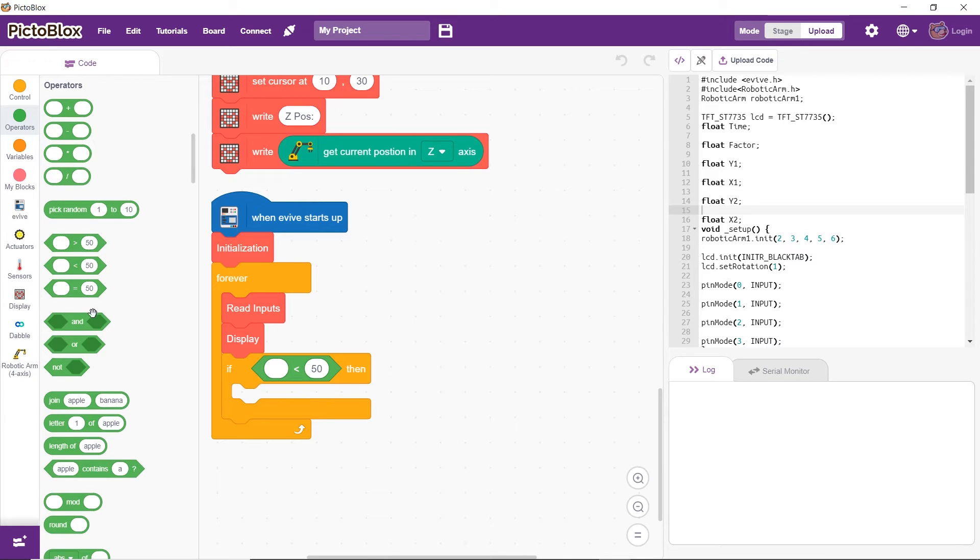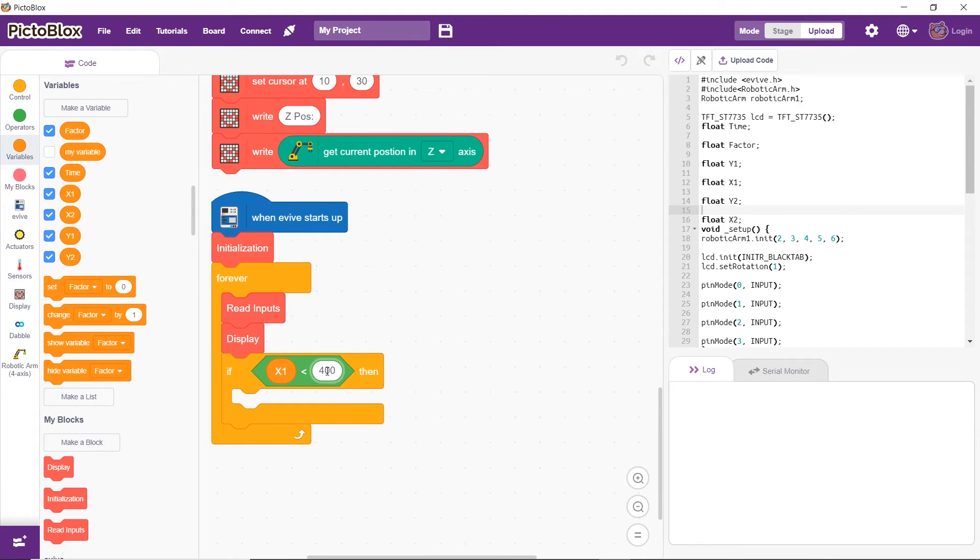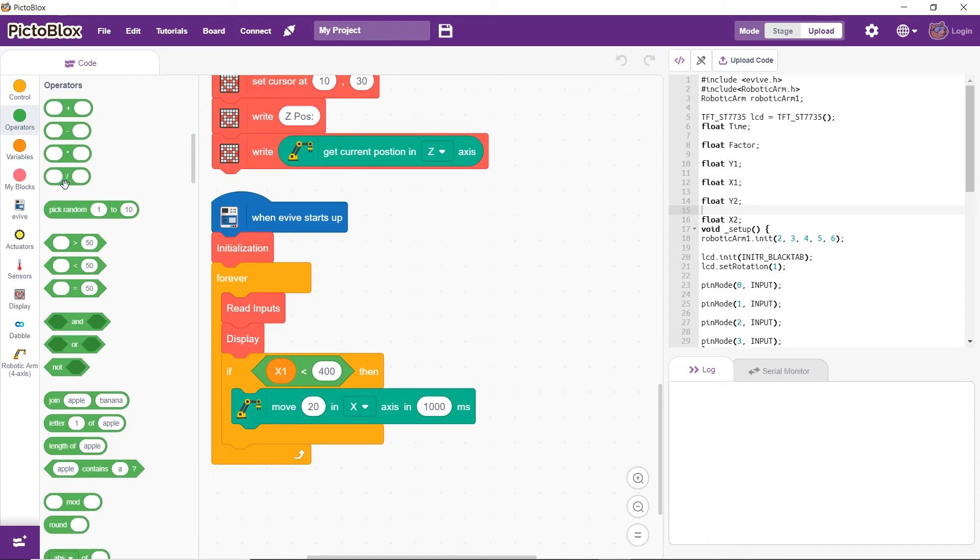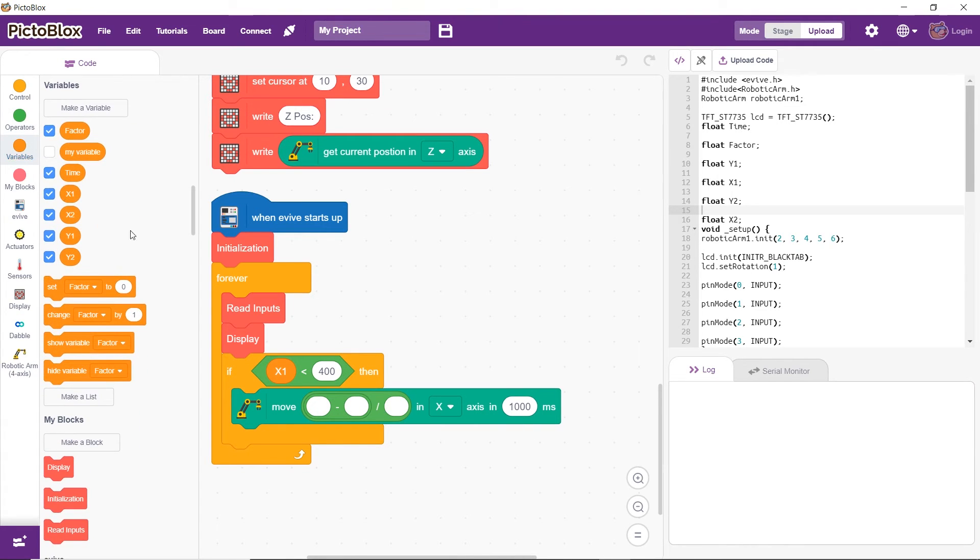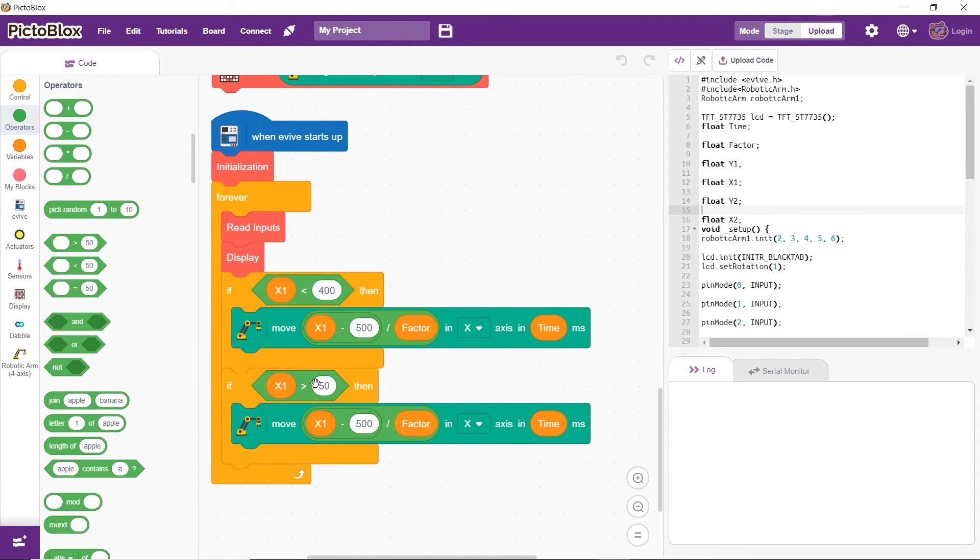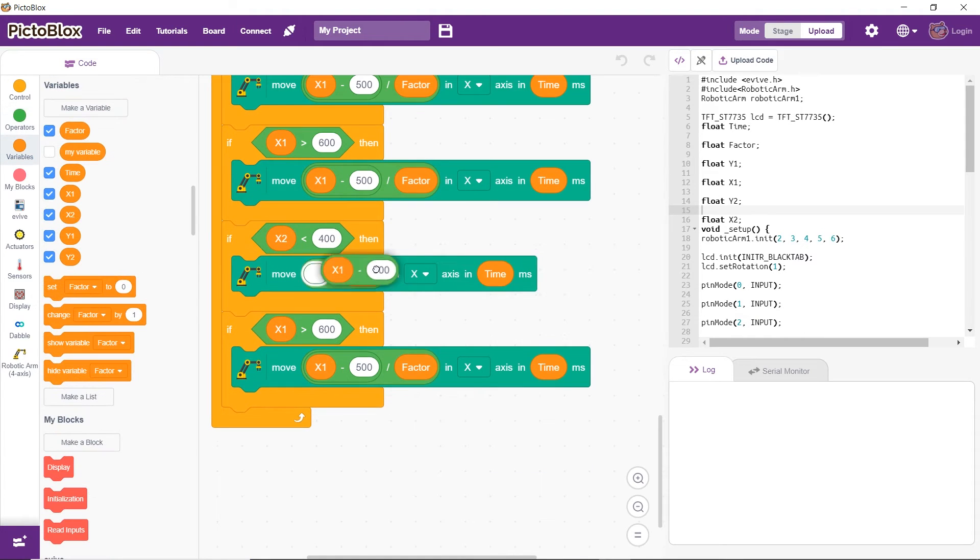The joystick is an analog device. So, to control the speed of the arm, we must use analog values between 0 to 1023. First, we will check if the value is less than 400. If it is, then move the arm by the values obtained by dividing the difference between the joystick value and the center of the joystick, which is 500 by the factor. We are using the division factor to scale down the value. This will make the robotic arm move along the negative x-axis. You can change the values of the factor and time to control the response and sensitivity of the joysticks to your liking. Add another if block to check if the values are greater than 600 to move the arm along the positive x-axis.